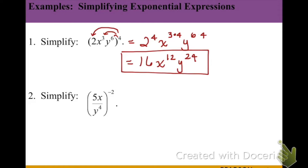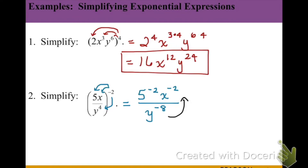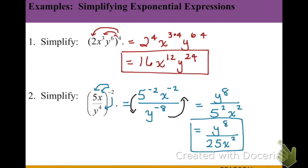Notice there are no negative exponents and only one of each base. In the next example, we distribute the negative 2 power to the entire numerator and denominator, giving us 5 to the negative 2, x to the negative 2, and y to the negative 8 (4 times negative 2). To eliminate the negative exponents, we flip the fraction: y to the 8th on top, and 5 squared and x squared on the bottom. Simplifying 5 squared gives 25, so the final answer is y to the 8th over 25x squared.